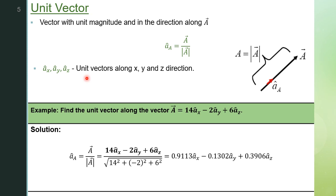For example, to find the unit vector along vector A = 14 ax-cap − 2 ay-cap + 6 az-cap, we divide this vector by its magnitude, which is the square root of 14² + (−2)² + 6². We get 0.911 ax-cap − 0.13 ay-cap + 0.39 az-cap. If you find the magnitude of this unit vector, you will get 1.